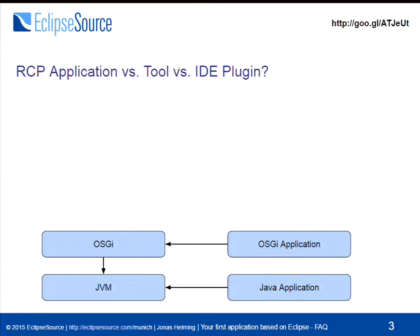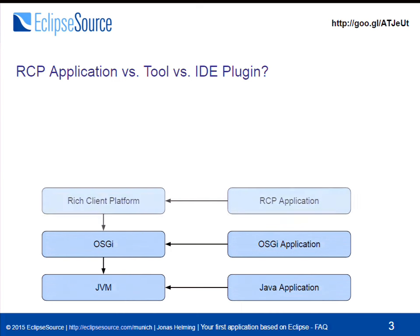The Rich Client Platform is a collection of frameworks enabling building general purpose applications — not development tools, but any kind of application you want to develop, typically for the desktop: things like an MP3 player, an ERP system, or whatever. The RCP provides features like perspective management, views, preference management — all the stuff you're used to when you use Eclipse — which you can reuse to create general purpose applications.